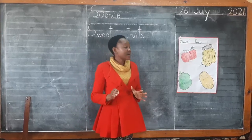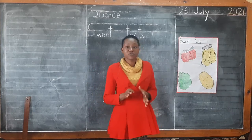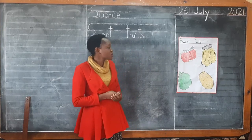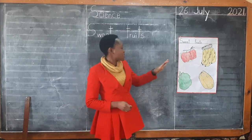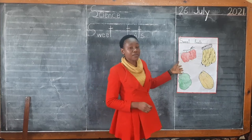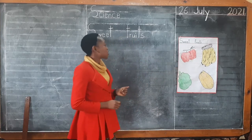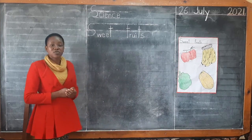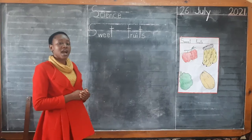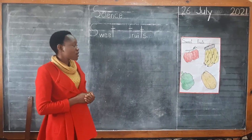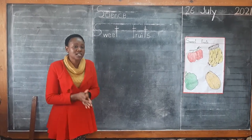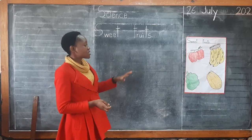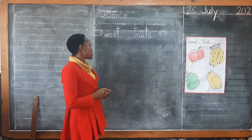So now we are back in class. We have seen some of the sweet fruits that we have around our school, and some of them we have on our charts. So we are going to draw some of the sweet fruits that we saw outside and the ones that were on our charts.